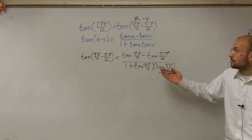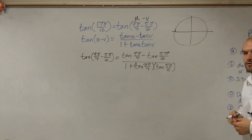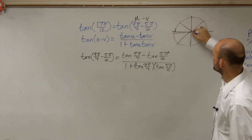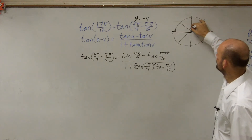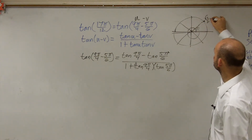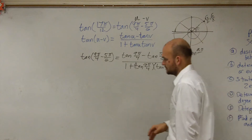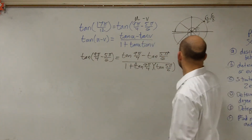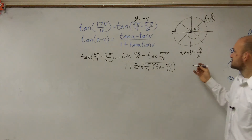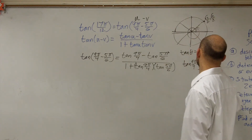Our next step is to evaluate the tangent of each angle. Going back to the unit circle, 9π/4 is more than one full revolution — it lands at the same point as π/4. The coordinate point at 9π/4 is (√2/2, √2/2). Since tangent of θ equals the y-coordinate over the x-coordinate, the tangent of 9π/4 equals (√2/2) ÷ (√2/2), which equals 1.